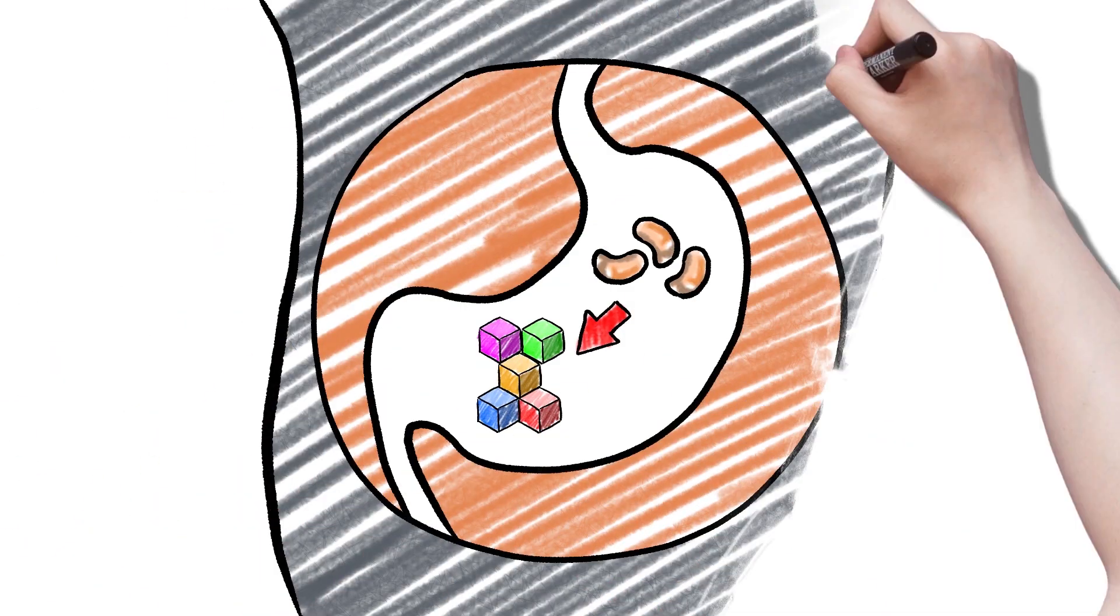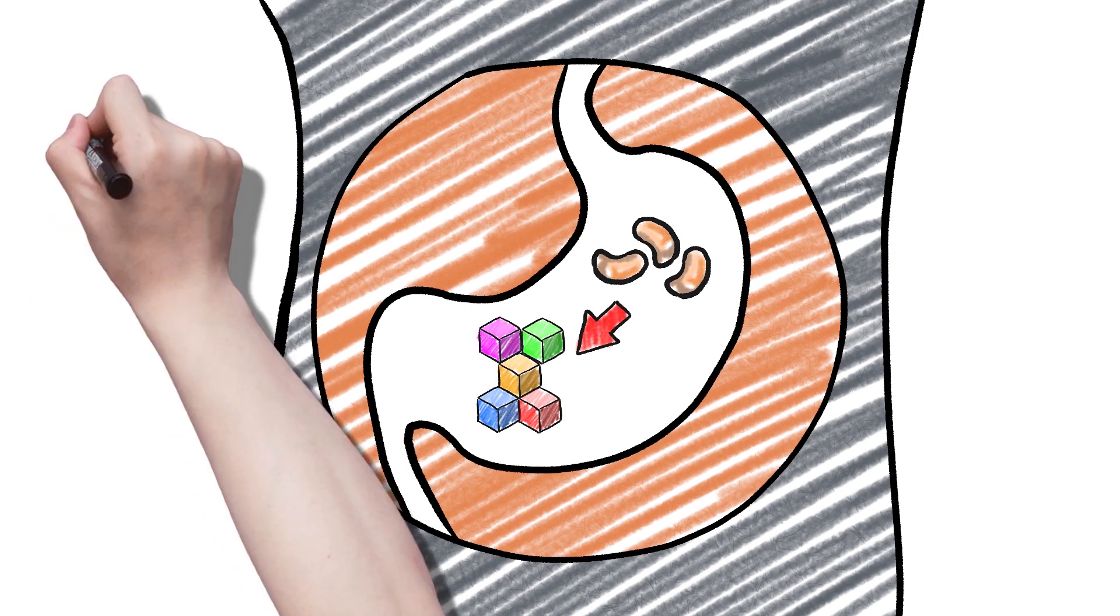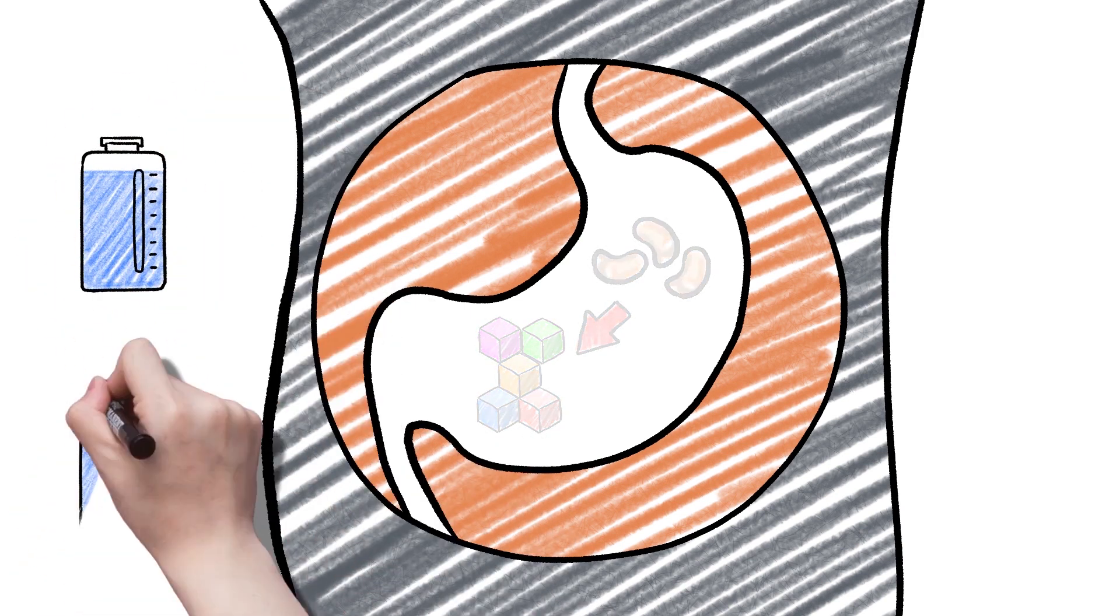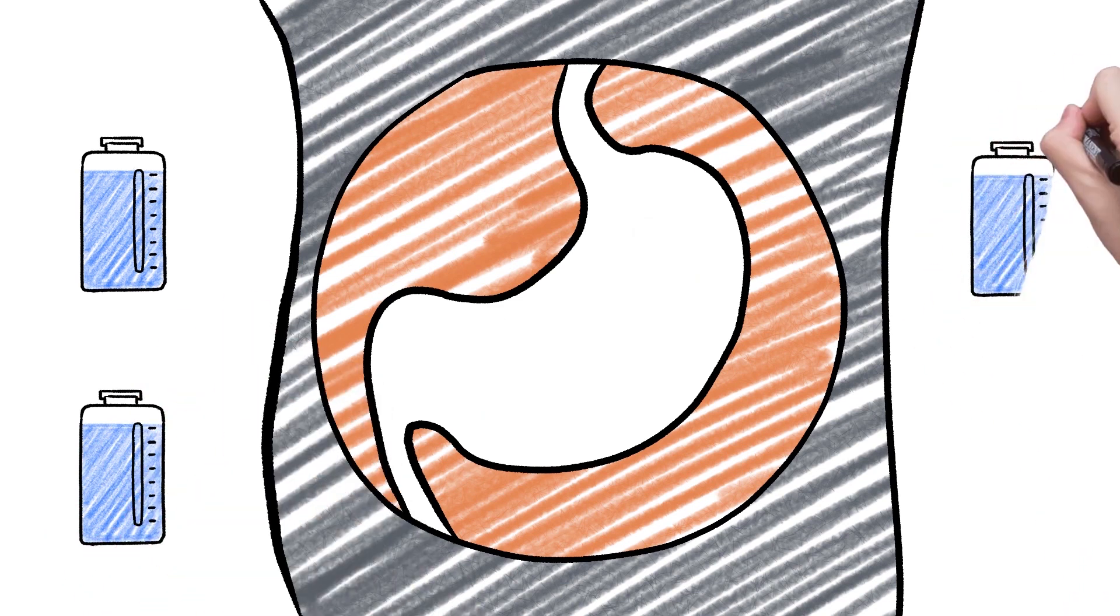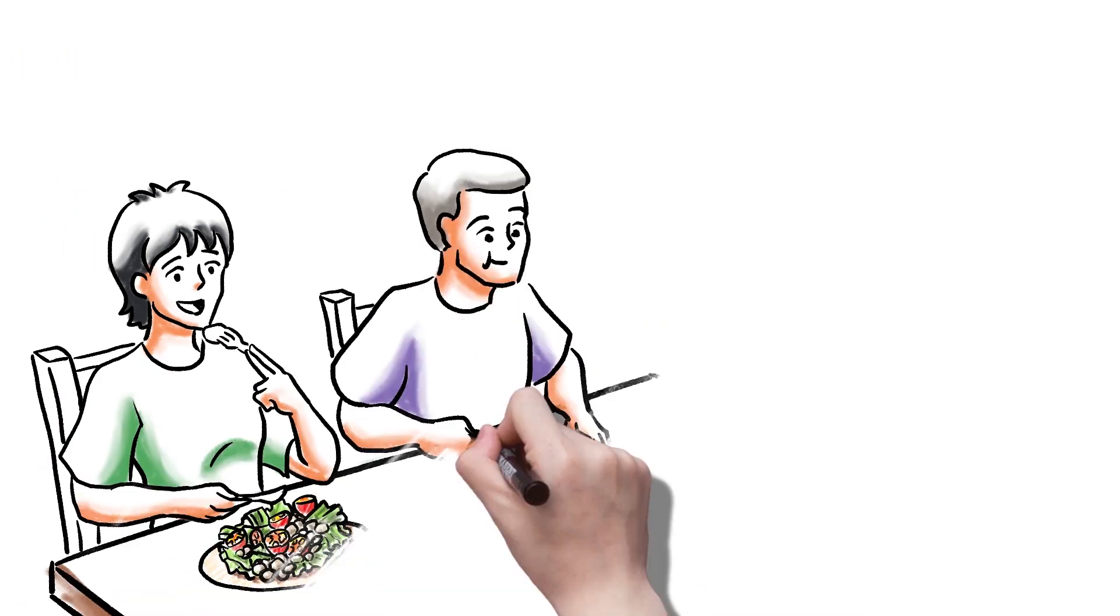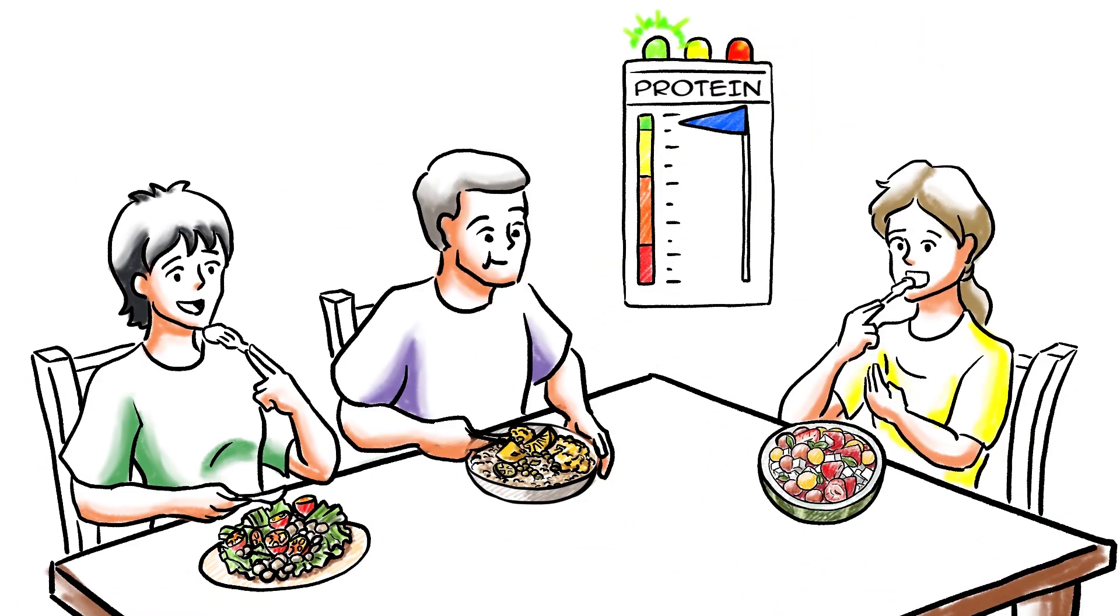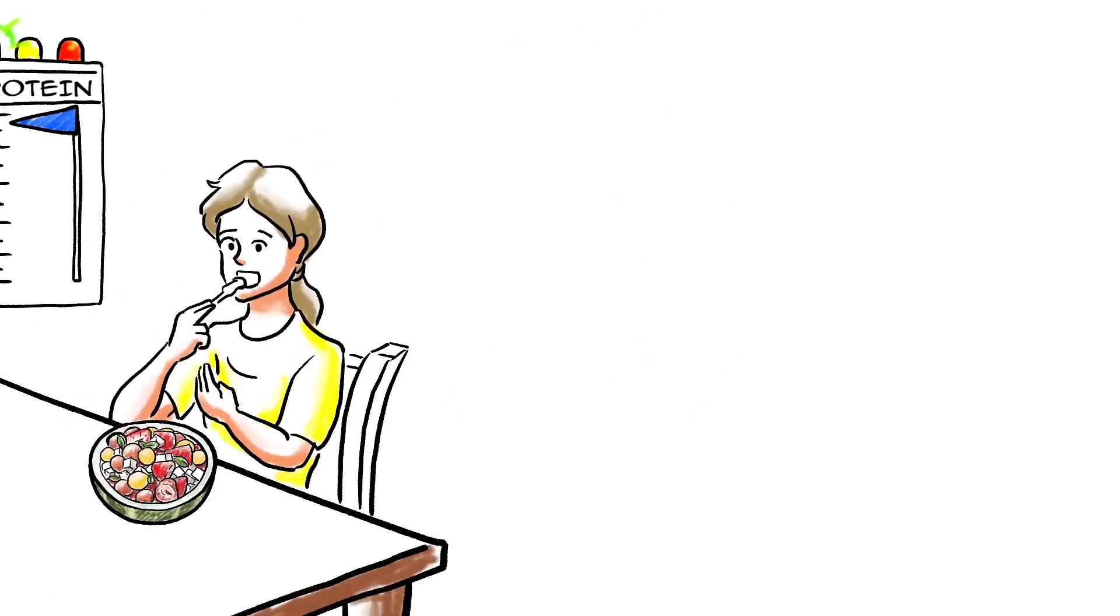That's because your body breaks down every protein, whether from animal or plant sources, into smaller chains or amino acids. All of these amino acids are then absorbed and used or stored for later. So, if you're eating a whole-food, plant-based diet, you'll get all of the essential amino acids your body needs and more than enough protein.